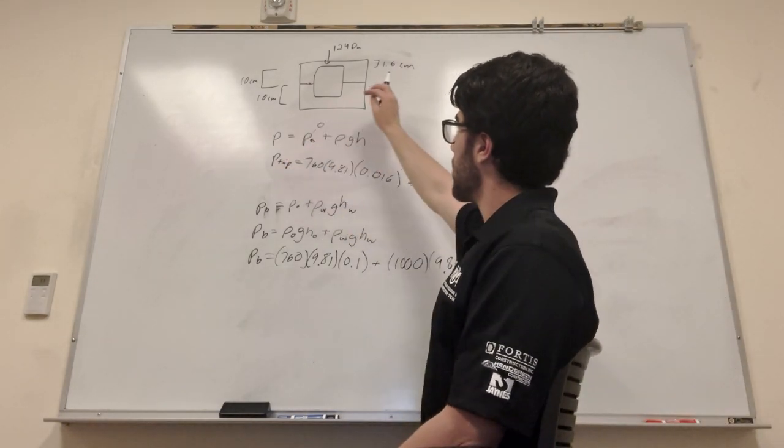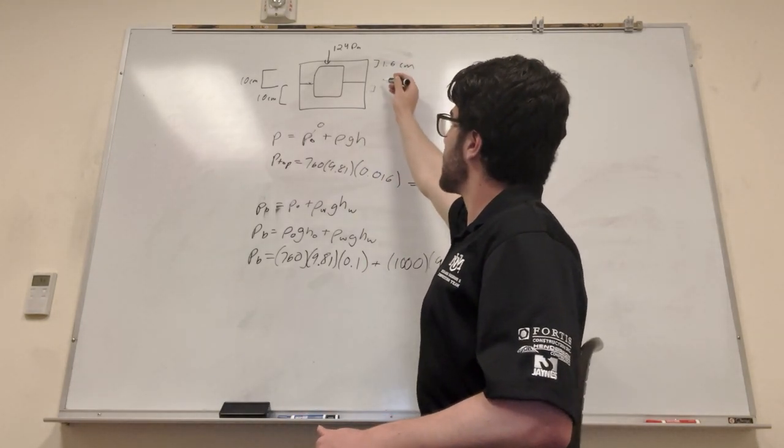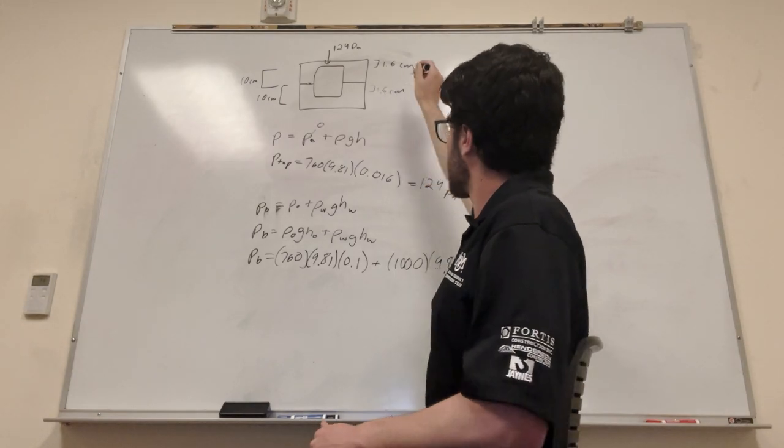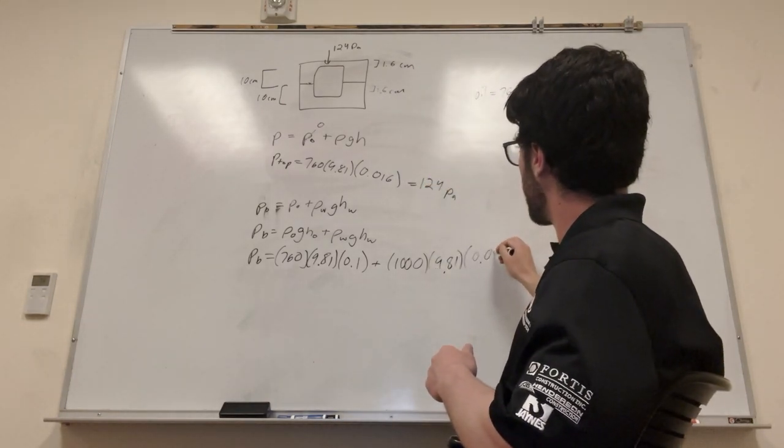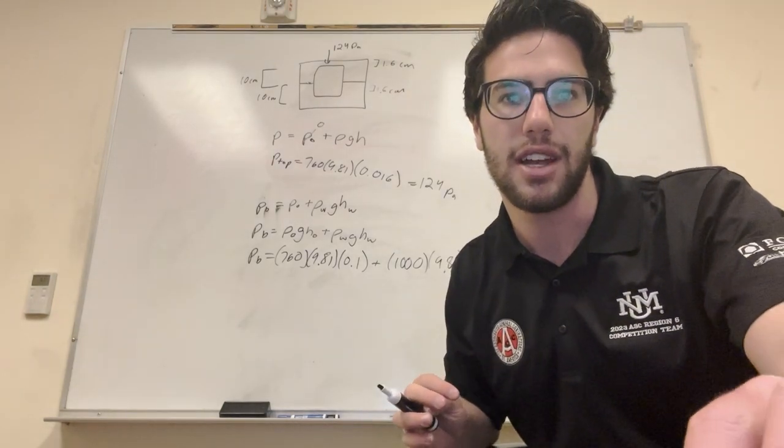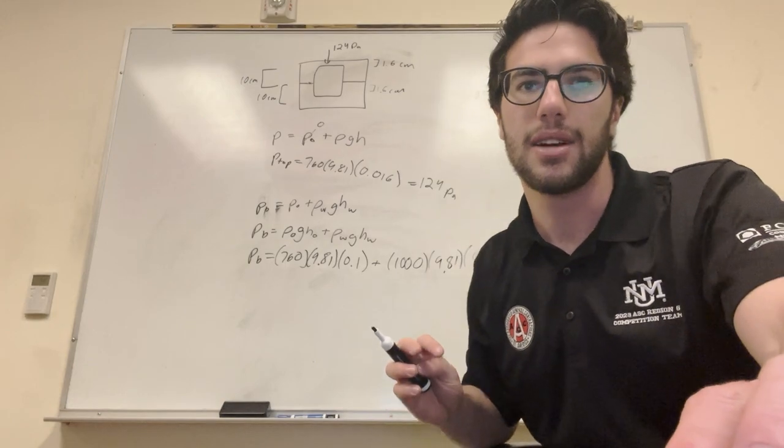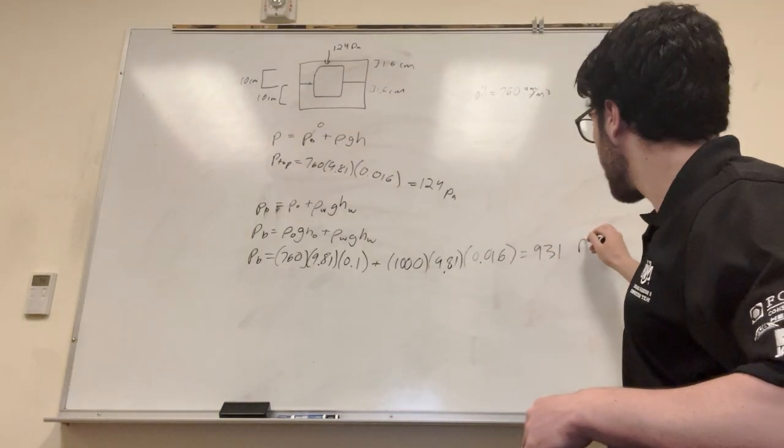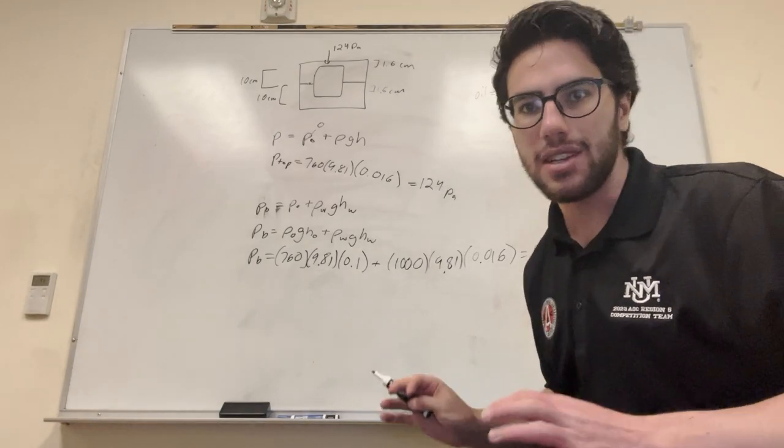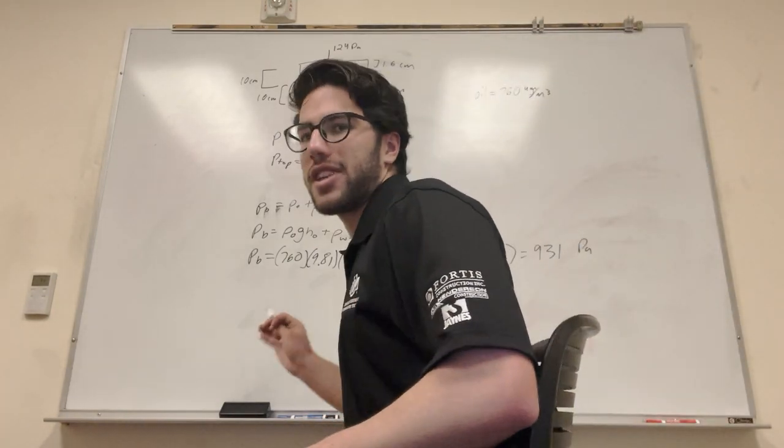So you have to do a little bit of mental math here to figure out that this height is gonna be equal to this height, too. 1.6 centimeters, so then 0.016 meters, plug this in your calculator, and you get a number that looks like 931 Pascals. So there's more pressure at the bottom, right? Cool.